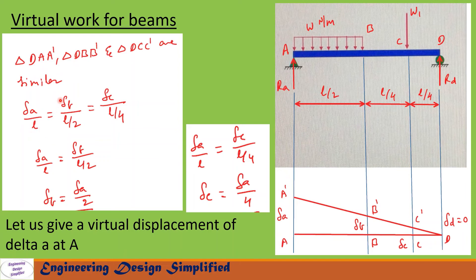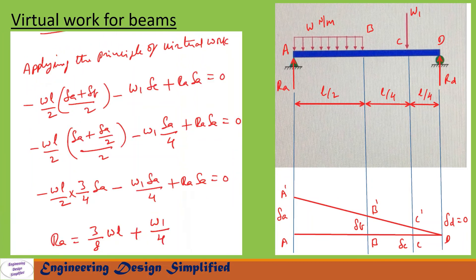To find reaction at A (Ra), let us give a virtual displacement of δa at A. The beam will assume the position D, C', B', and A'. We again have triangles D-C-C', D-B-B', and D-A-A'. From these triangles: δa/L = δb/(L/2) = δc/(L/4). Therefore δb in terms of δa is δb = δa/2, and similarly δc in terms of δa is δc = δa/4.